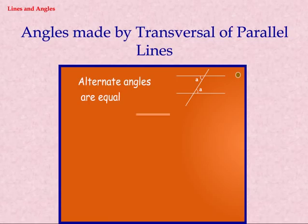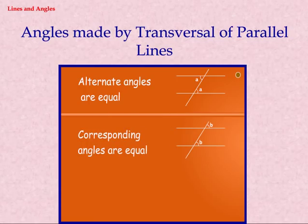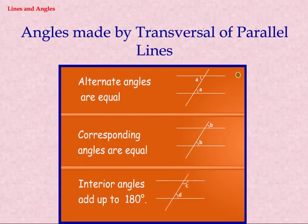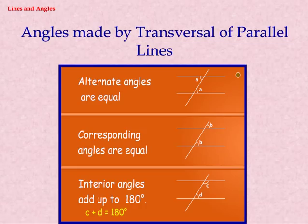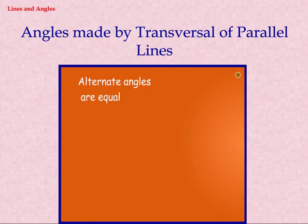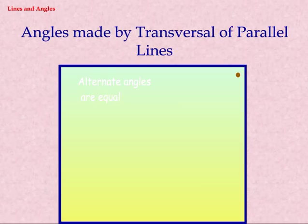Angles made by a transversal of parallel lines — summary. Alternate angles are equal. Corresponding angles are equal. Interior angles add up to 180 degrees. C plus D equals 180.